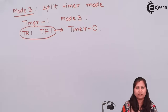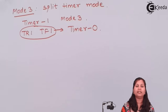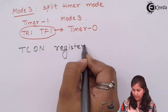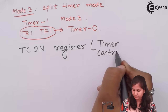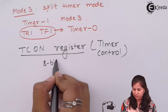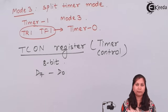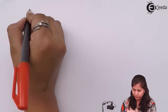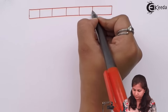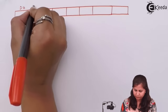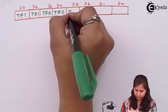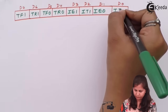This was the TMOD register, which decides the modes of operation of the timers. The next special function register associated with the timers is the TCON register — the timer control register. This register is also an 8-bit register with bits D7 to D0, each having a specific function. Let us see the format of the TCON register.